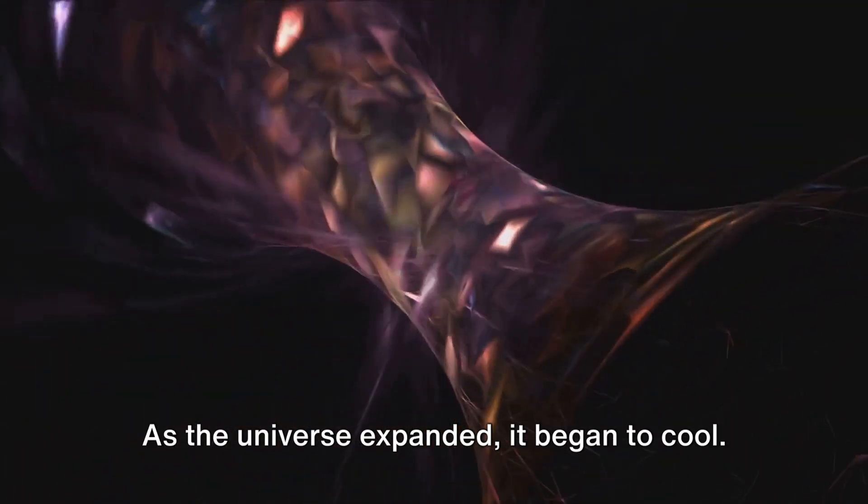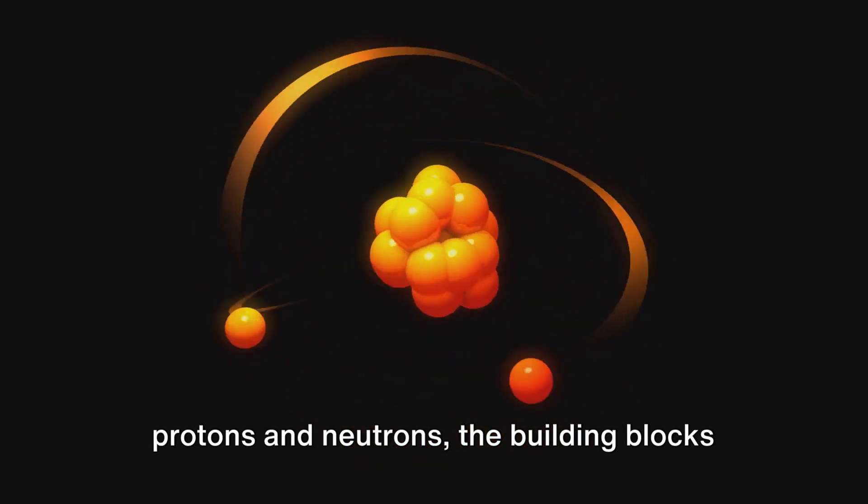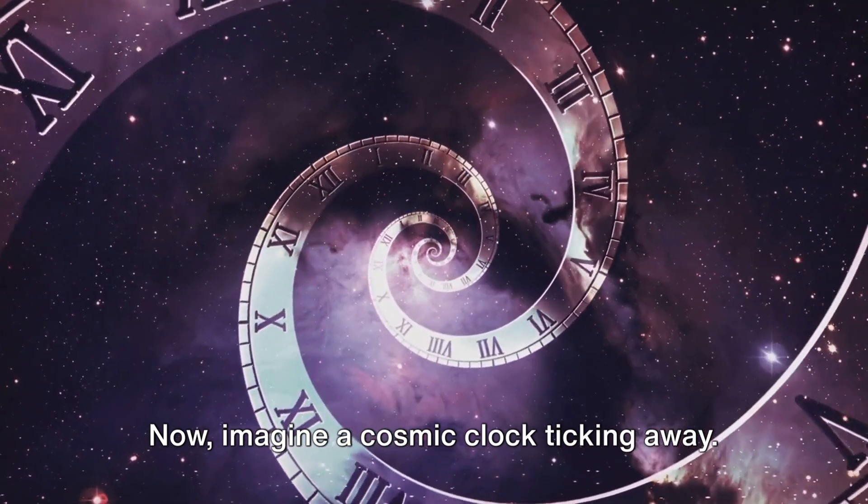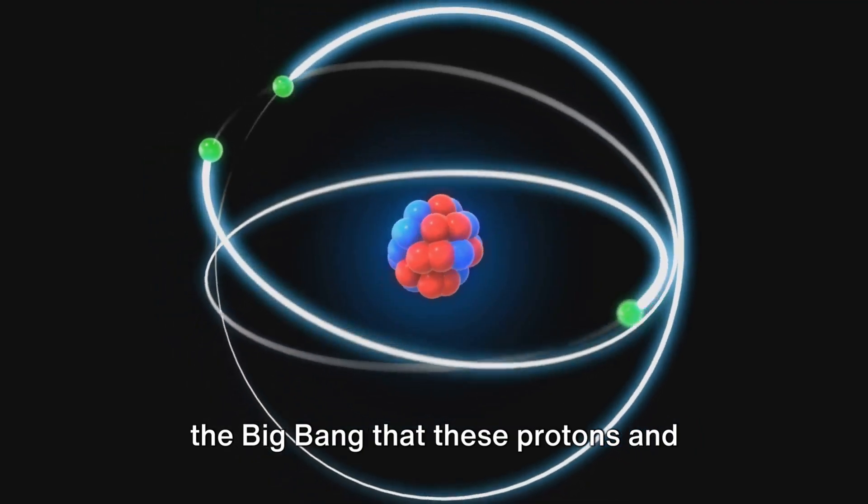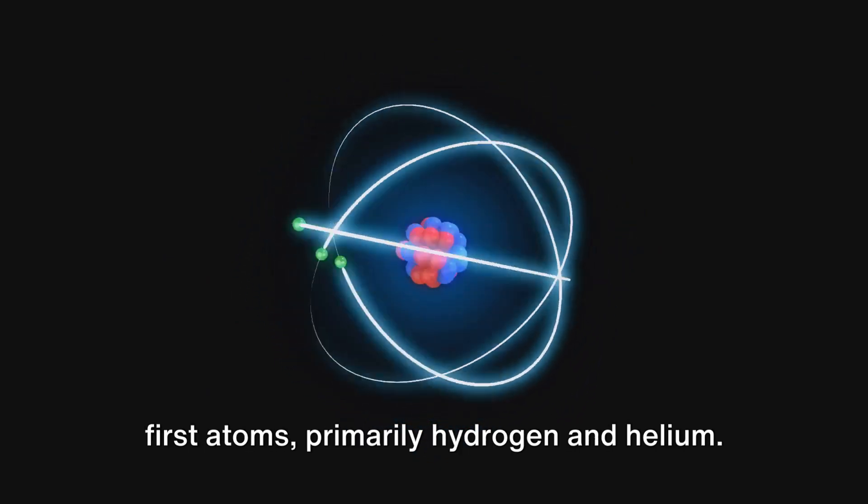As the universe expanded, it began to cool. This cooling allowed for the formation of protons and neutrons, the building blocks of atoms. Imagine a cosmic clock ticking away. It's not until about three minutes after the Big Bang that these protons and neutrons start to combine to form the first atoms, primarily hydrogen and helium.